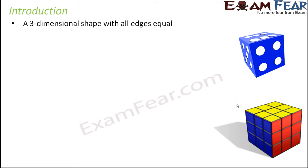The best example of a cube you can think of around you is the dice used while playing Ludo. When you look at the dice, all the sides are equal in length. There are nine visible edges and three more edges which we cannot see, but all edges are equal in a cube. The Rubik's cube, which we normally play with as a puzzle, is also an example of a cube.